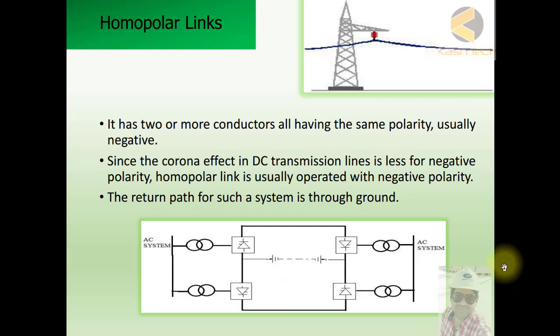In this case the feature is similar to monopolar. Each conductor is supplying negative, and the return path will be positive through ground electrode. You can see this is the return path, and both electrodes are connected through electrical rods. So this is the configuration of homopolar. Thank you.